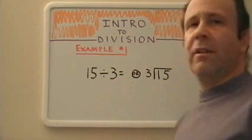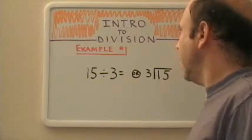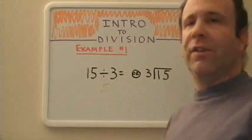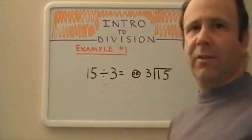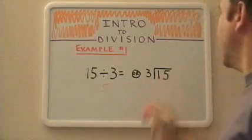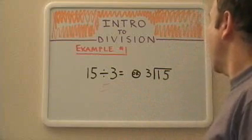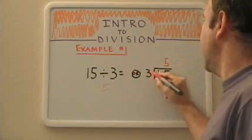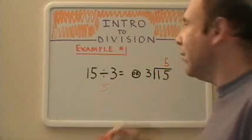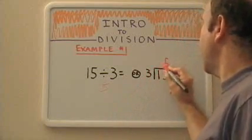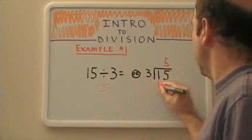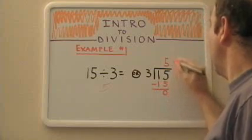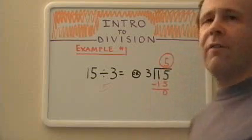So we know that 15 divided by 3 equals 5, because 5 goes into 15 three times. If we're using the division bar, we're going to put our 5 over the 5 in 15, because we're dividing the 3 into the entire number 15. We multiply 3 times 5, which equals 15. We subtract, get 0, for a final answer of 5.